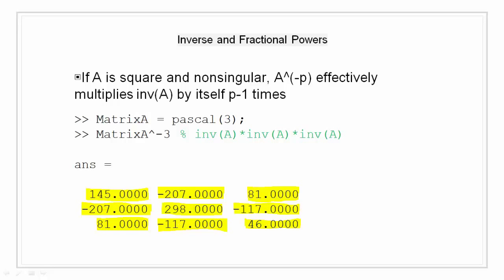Here in this example, again we create a 3 by 3 Pascal matrix A, and we do an inverse with the power of minus 3. So we get the answer as highlighted in yellow. This is similar to multiplying inverse of matrix A three times.